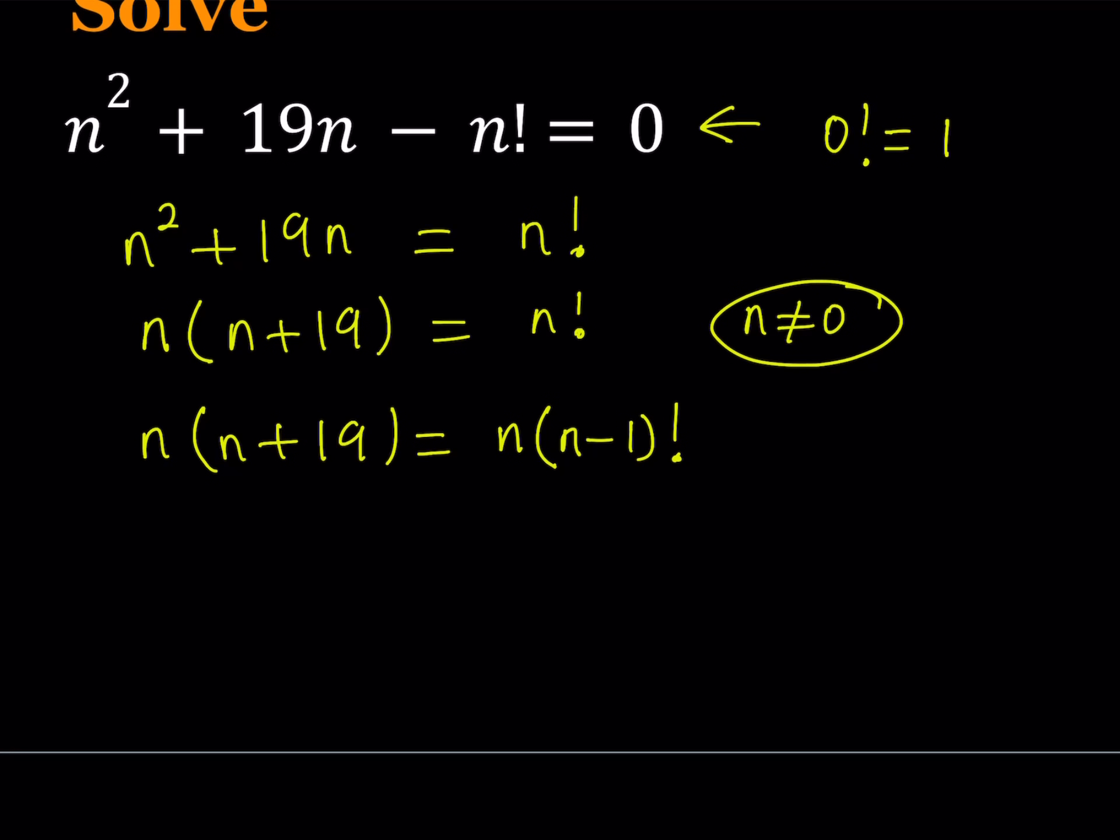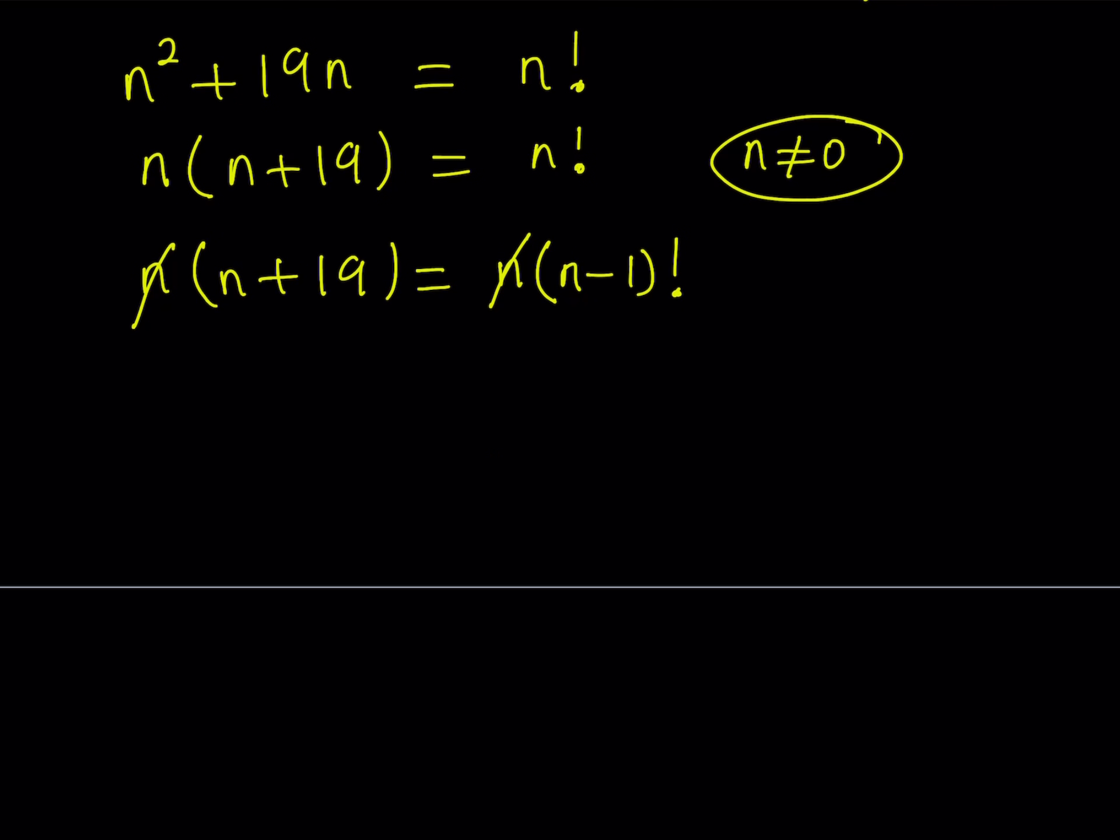And here now I can divide both sides by n, knowing that n does not equal 0. We got a simpler equation. We got n plus 19 equals n minus 1 factorial.